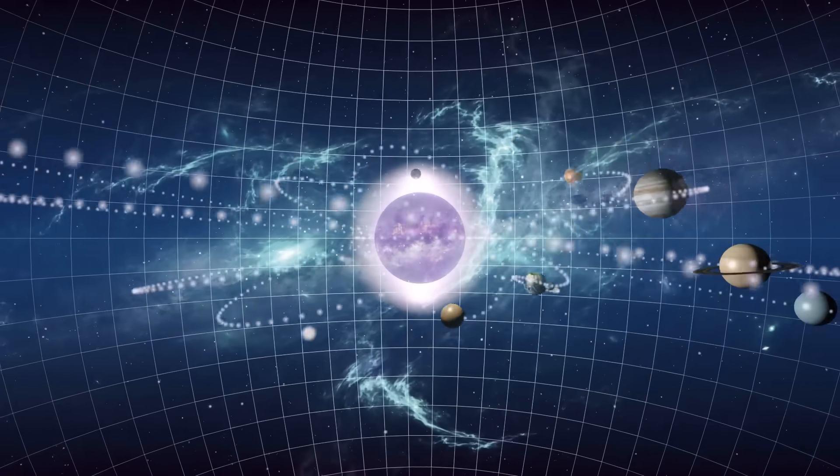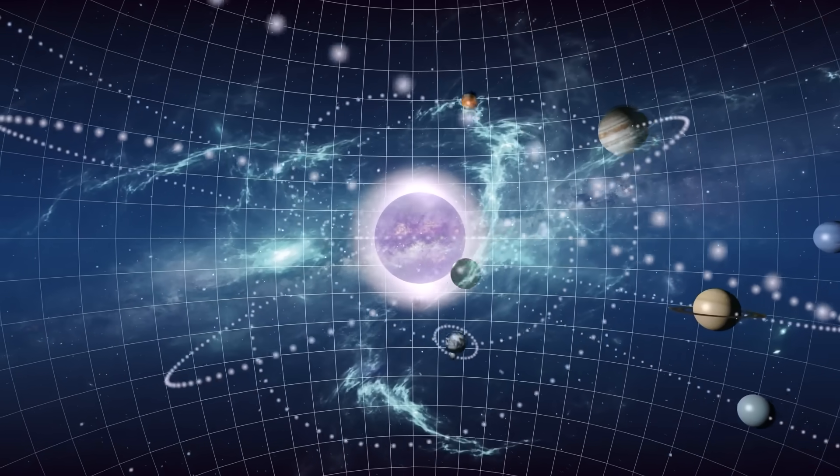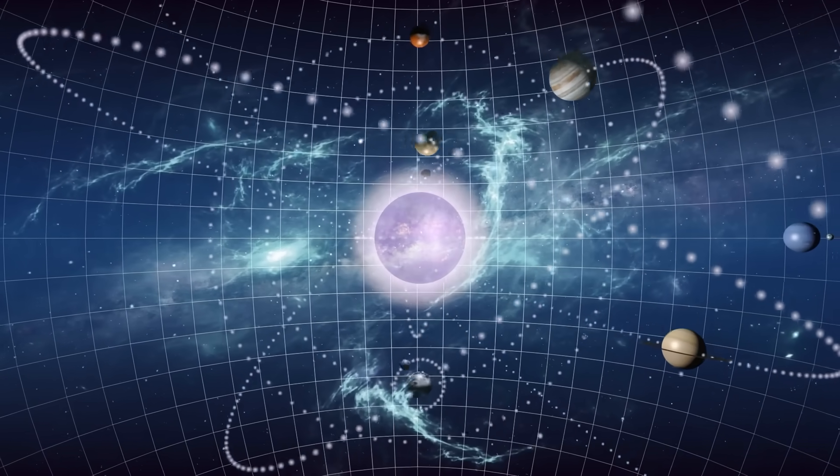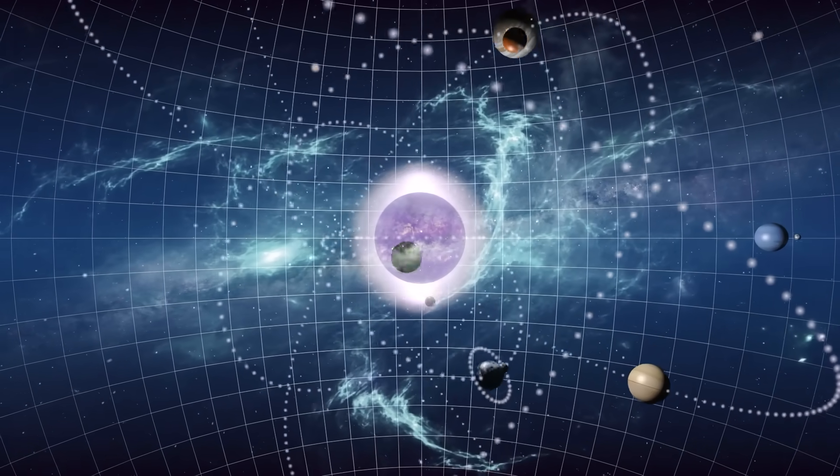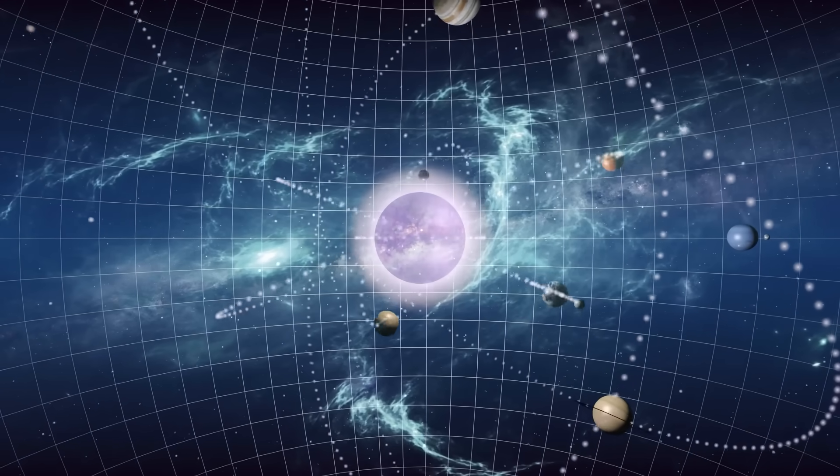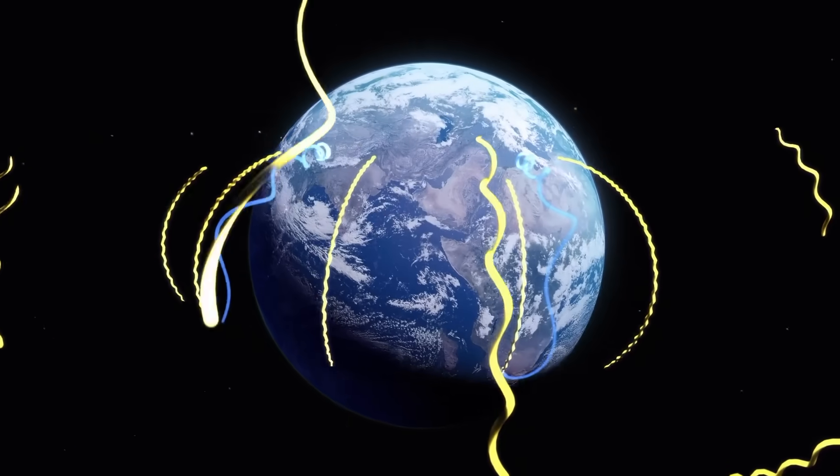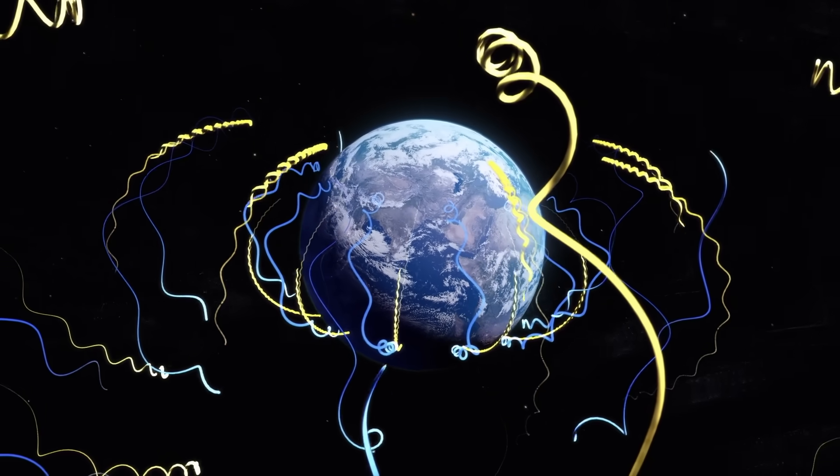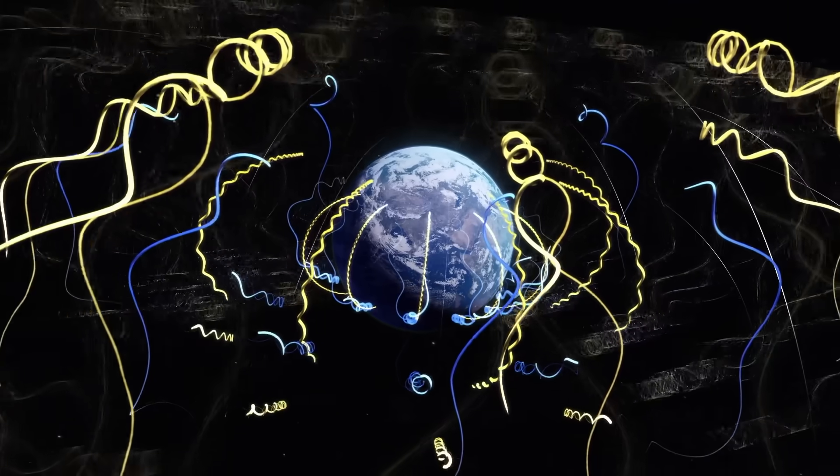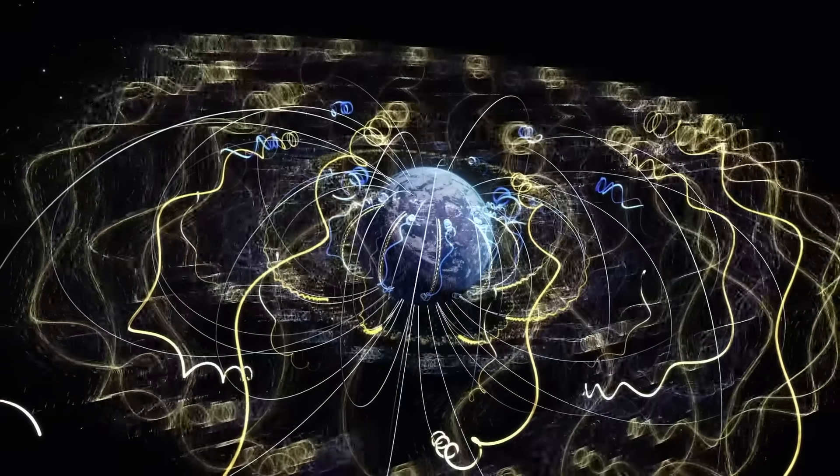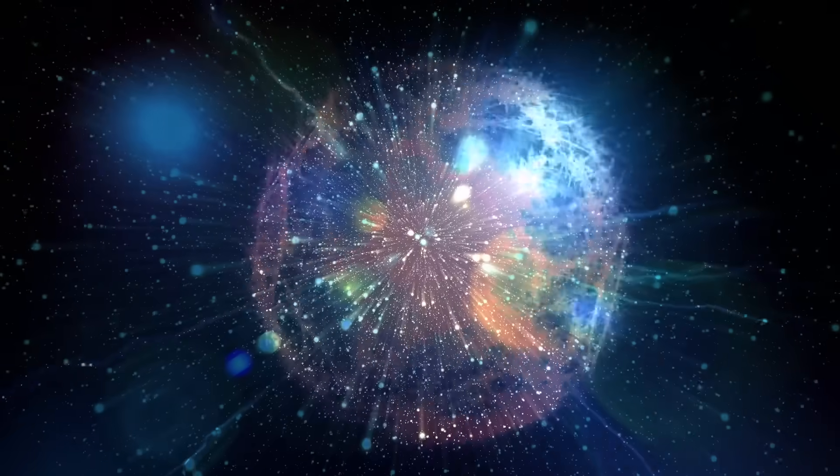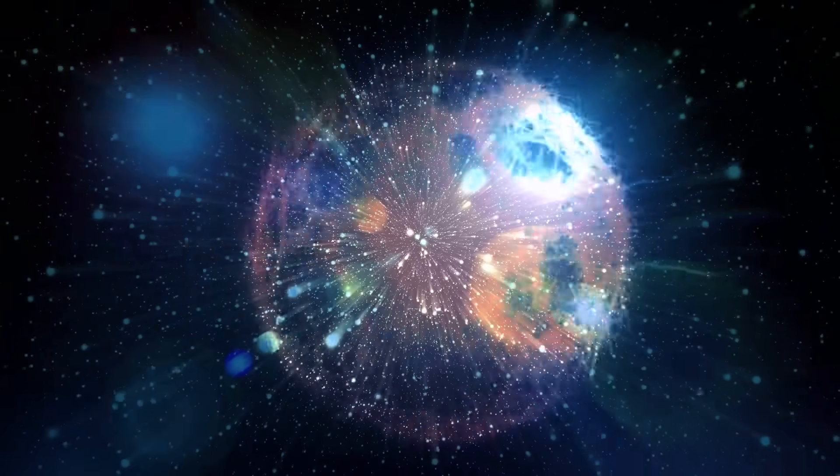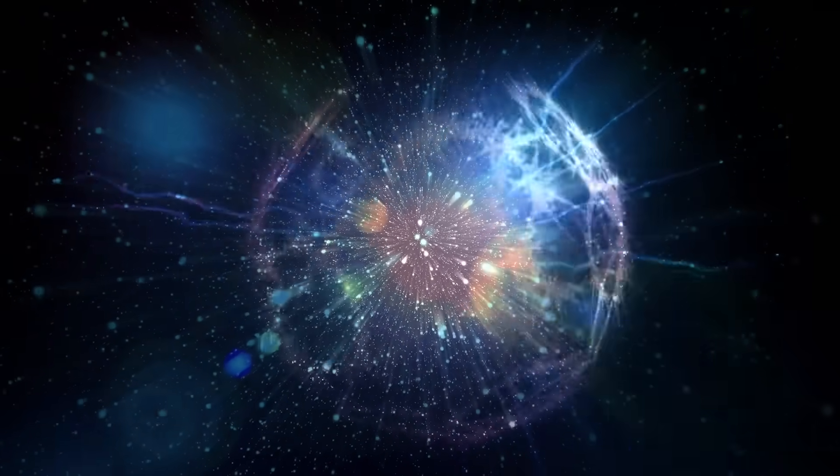The Electric Universe theory takes into account the electric nature of plasma interaction in our universe. For instance, we know that there are very strong electric filaments that connect the Earth and the Sun that are constantly transferring gigawatts of power between planets and stars.